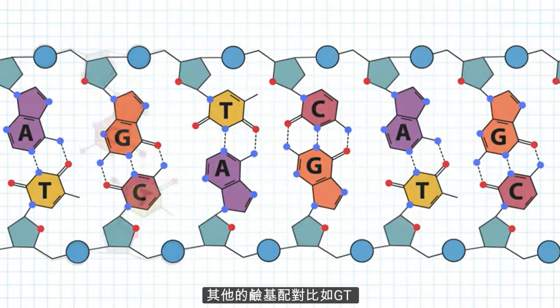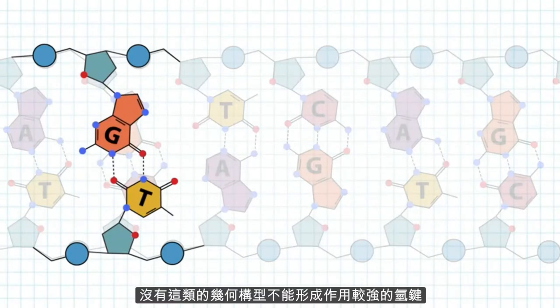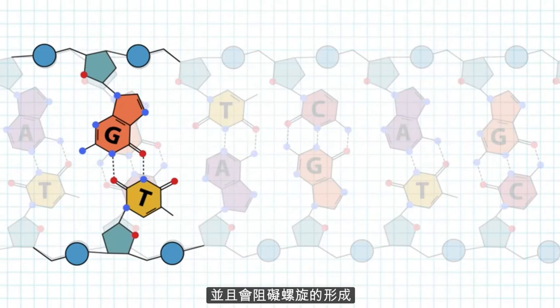Other base pairs, like GT for example, do not have the same geometry, cannot form strong hydrogen bonds, and disturb the helix.